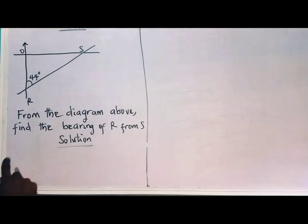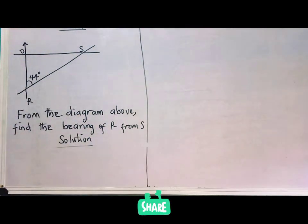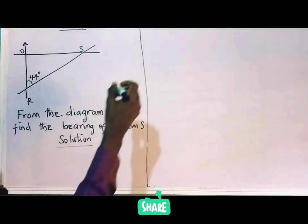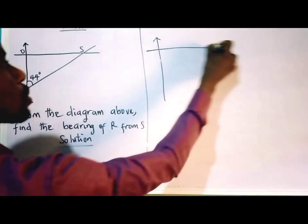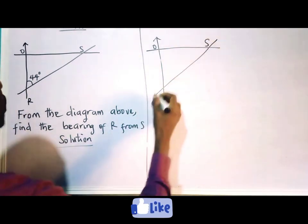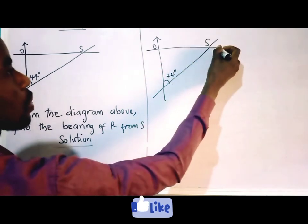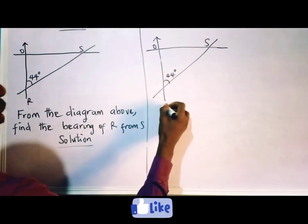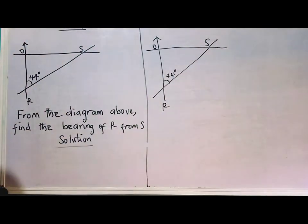From this diagram, we have been told to find the bearing of R from S. As I draw the diagram again, this is the origin, this is S, and we have 44 degrees here. This is R. We are told to find the bearing of R from S.